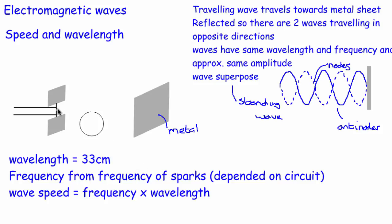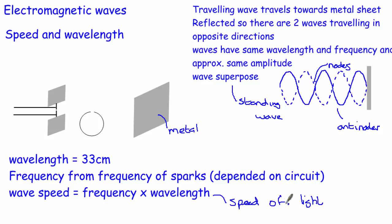The frequency of the sparks equalled the frequency of the electromagnetic waves being generated, because the electric field changes each time a spark is created. He connected the transmitter to a circuit that regularly provided enough charge for sparks at a known frequency, so he knew both the wavelength and frequency. Using the wave equation v = f × λ he was able to calculate the speed of these waves, and he found they travelled at the speed of light — exactly what Maxwell had predicted.